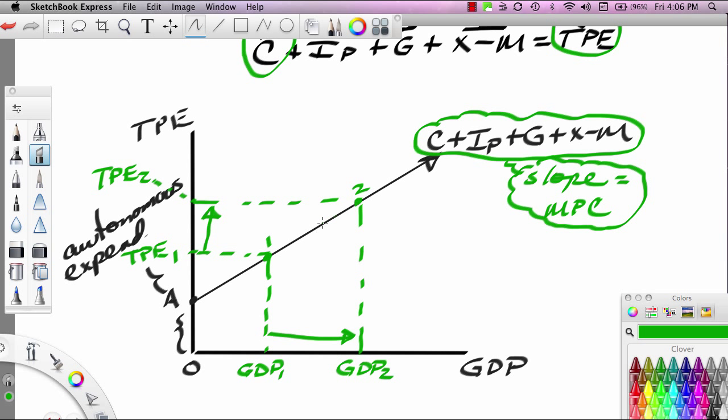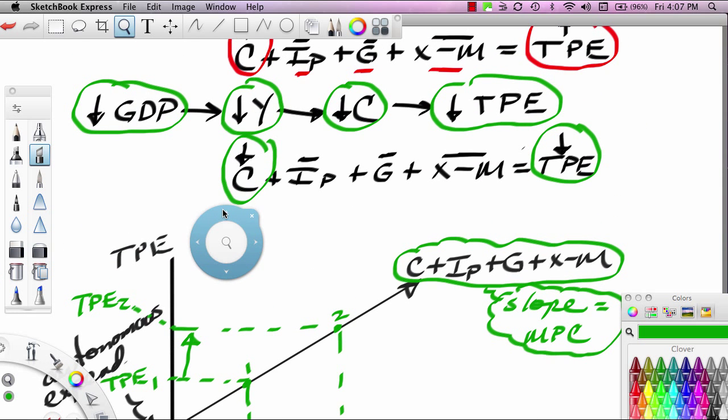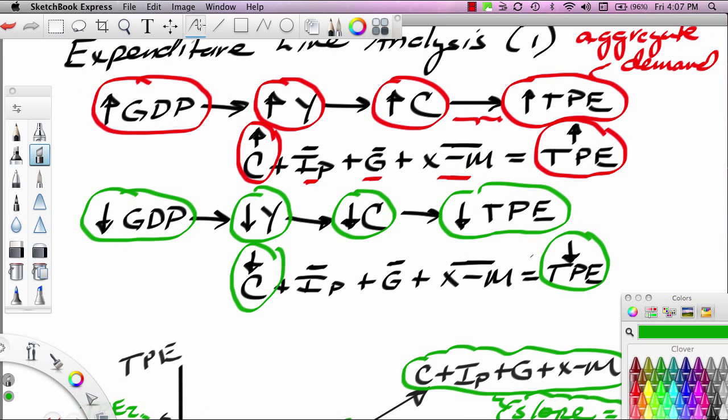We're going to assume that the expenditure line has a slope equal to MPC. That makes sense because if we think about the connection between GDP and TPE, we can see that GDP works through a transmission mechanism, income and consumption. MPC shows up right here in this linkage. MPC tells us what percentage of that income is going to be spent. If MPC is equal to 0.8, then we're saying every additional dollar of income, 80 cents is going to be spent. The slope of the expenditure line relative to GDP is really a function of MPC, how much spending is done in relation to how much income is earned.